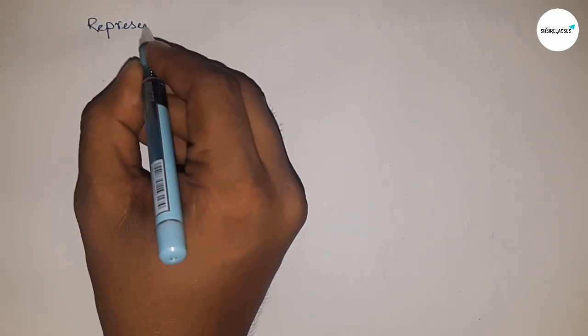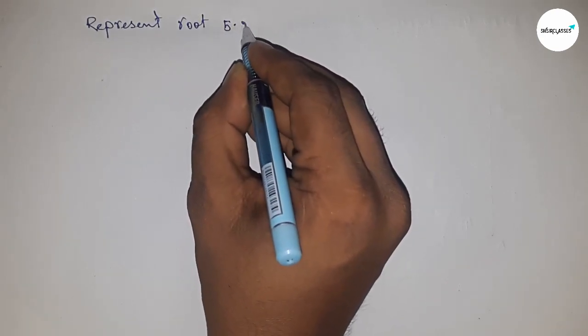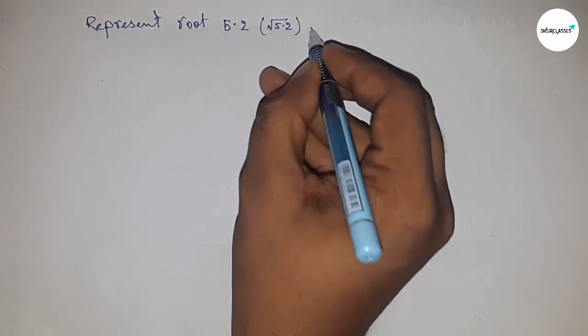Hi everyone, welcome to Assessor Classes. Today we're talking about the representation of √5.2 on a number line.